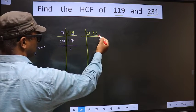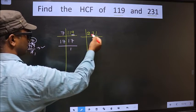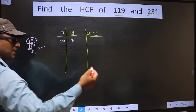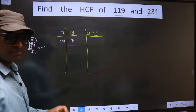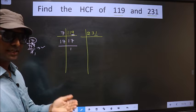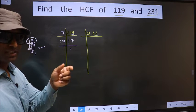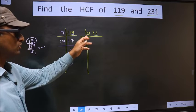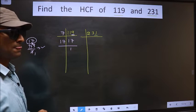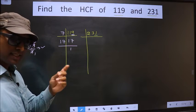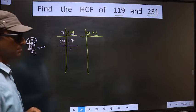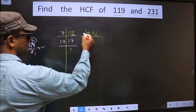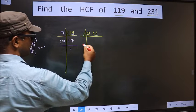For this number, the last digit 1 is not even, so this number is not divisible by 2. Next prime number, 3. To check divisibility by 3, we should add the digits: 2 plus 3 plus 1, we get 6. Is 6 divisible by 3? Yes. So this number is also divisible by 3. So we take 3 here.